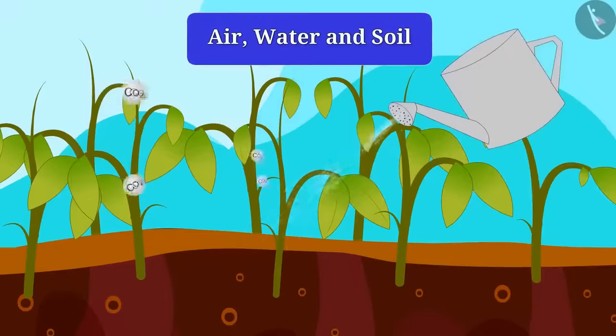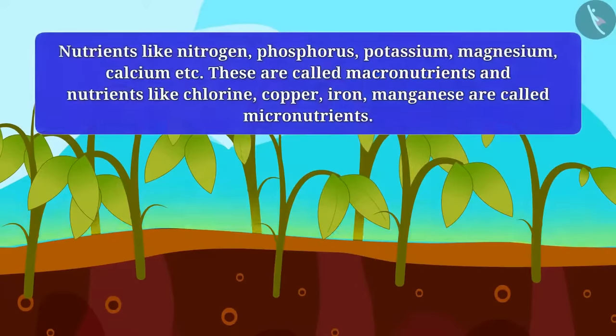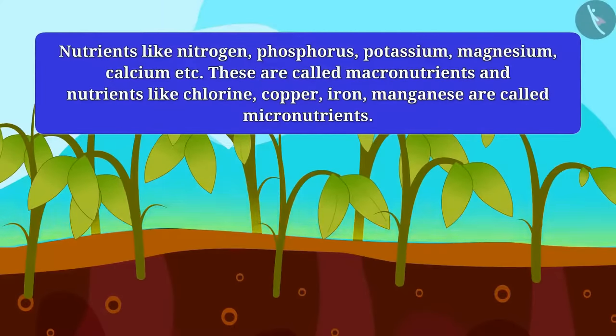Most of the trees get nutrients from the soil like nitrogen, phosphorus, potassium, magnesium, calcium, etc.